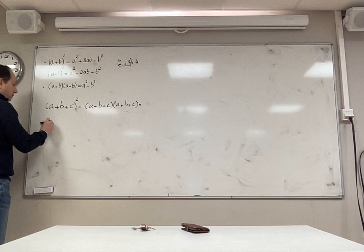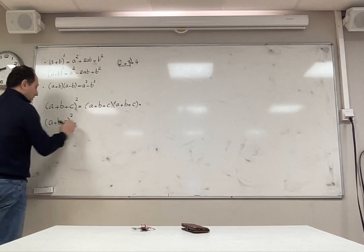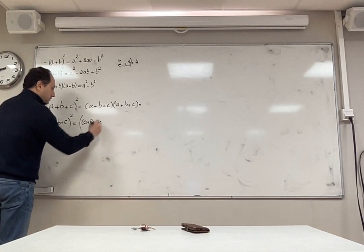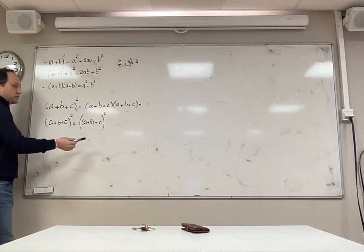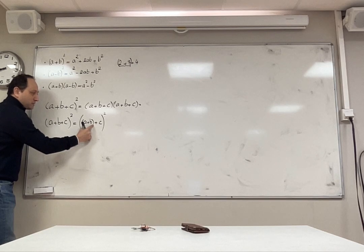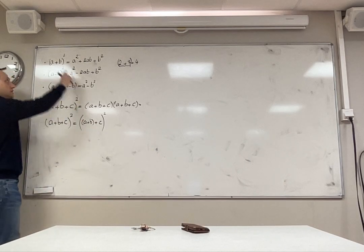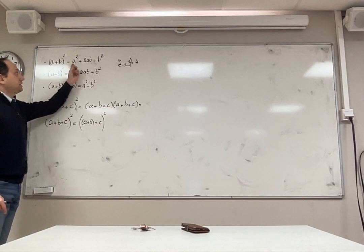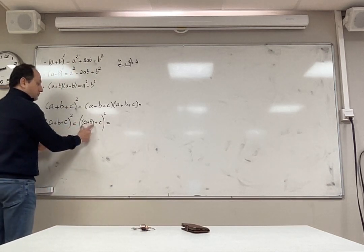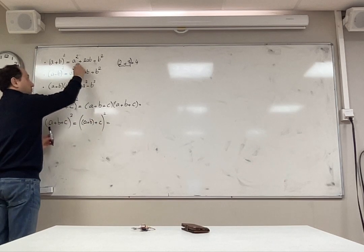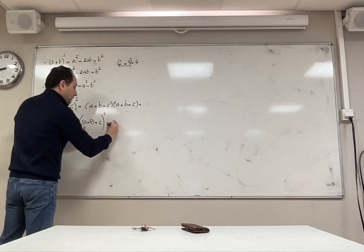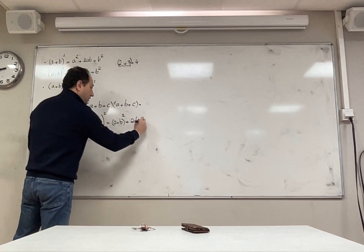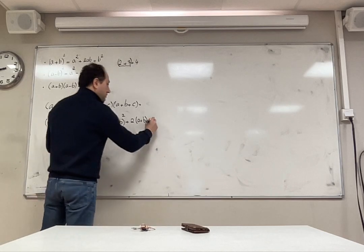So if I want to expand a plus b plus c squared, one way is to imagine a and b together as one single number, then plus c, to the power of two. I can use the formula by considering a plus b as one number and c as my second number. The message: the first one squared, which is a plus b squared, plus two times the first times the second, plus the second one squared.